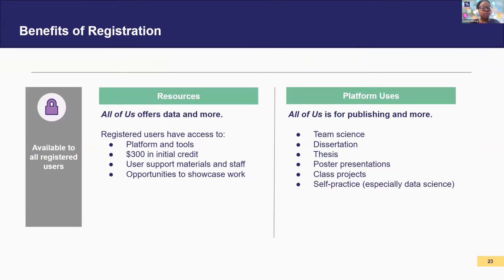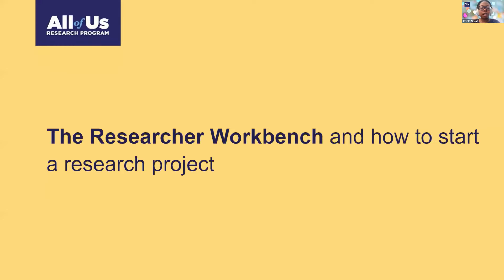Why register? There are many benefits: access to our platform and tools, $300 in initial computing credits for all new users, user support materials and staff, and opportunities to showcase your work. Our platform supports novel research and publishing, team science, dissertations, theses, poster presentations, class projects, and self-practice — just to name a few.